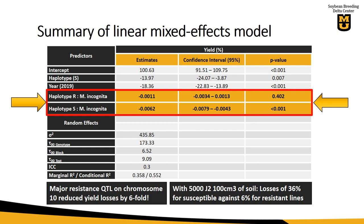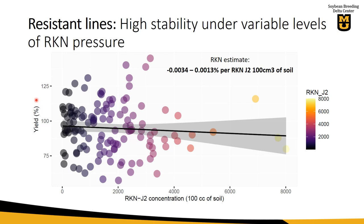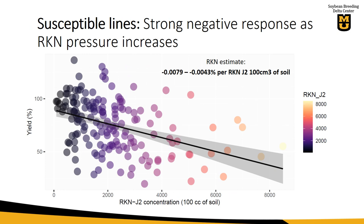This plot has yield on the y-axis and nematode concentration on the x-axis. This is the plot for the resistant lines, and what is incredible is that the trend for resistant lines is a flat line. So even though you have higher nematode pressure, the resistant lines maintain their performance no matter what the concentration is. When you look at the susceptible plot, it's a very clear negative trend, which means that the more nematode pressure you have, the higher your yield loss will be.